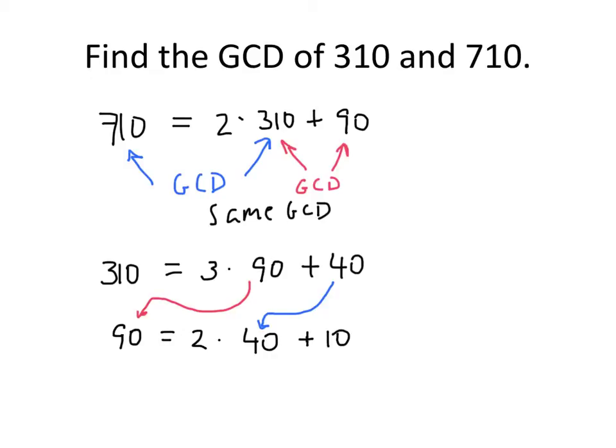One more time, as we'll see. The old divisor becomes the new dividend. The old remainder becomes the new divisor. And 10 goes into 40 four times, remainder zero.